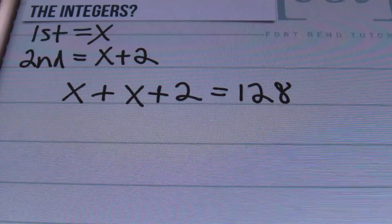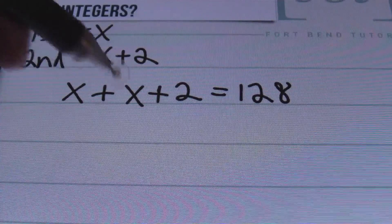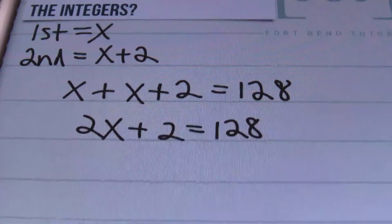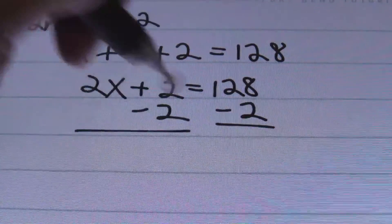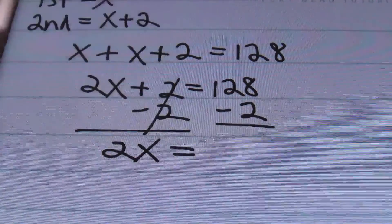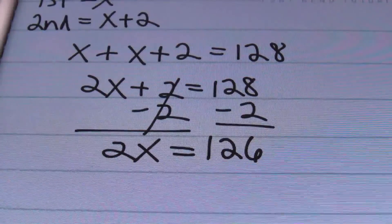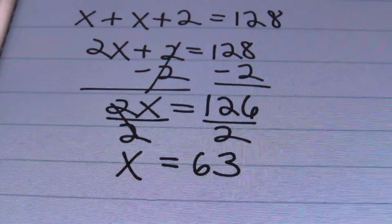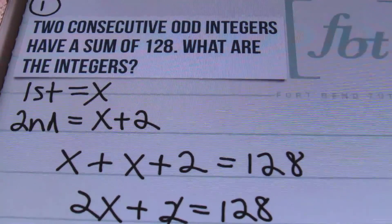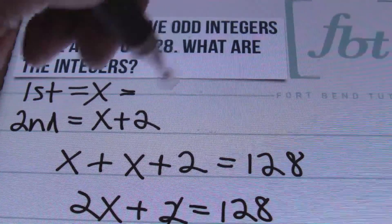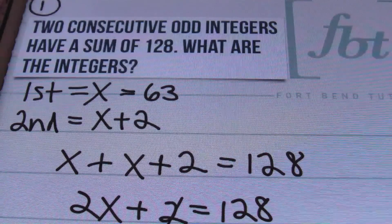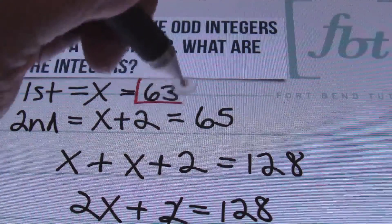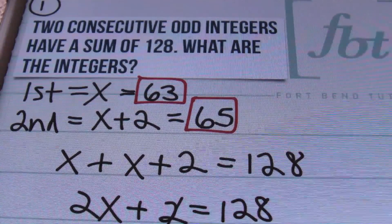Here's the equation. Next, I'm going to combine like terms. I have 1X plus 1X, which gives me 2X. I bring down that positive 2, which equals 128. From there, I'll solve this two-step equation by subtracting 2 from both sides. My 2's cancel out, leaving 2X equals 126. Now I'll divide both sides by 2. X equals 63 — that's my first odd integer. Going back to the definitions: X is 63, and the second odd integer is 2 more than that, so 63 plus 2 gives us 65. I'll box up the answers: 63 and 65. That's problem number one.